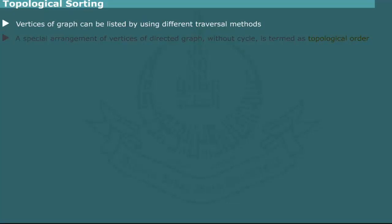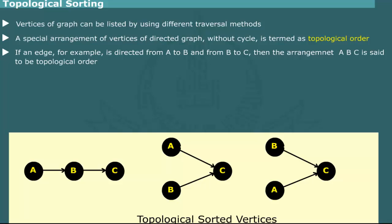Topological Sorting. We have seen that vertices of a graph can be listed in several ways by using different traversal methods. A special arrangement of vertices of a directed graph without cycle is termed as topological order. In this arrangement, if an edge is directed from a vertex A to vertex B and an edge is directed from B to C,